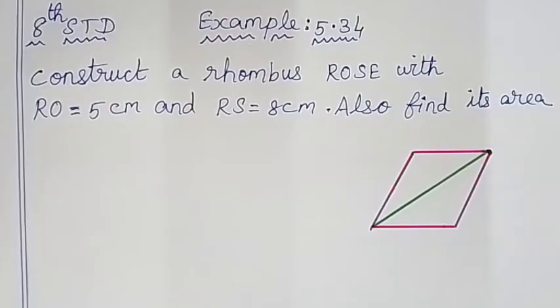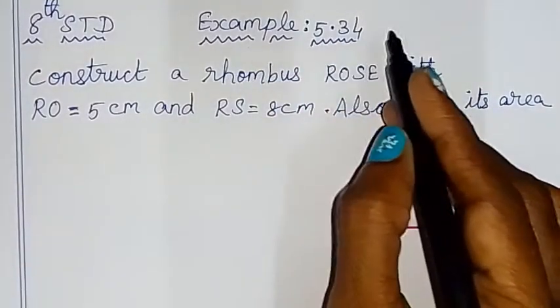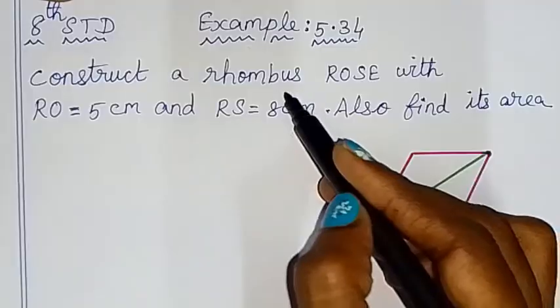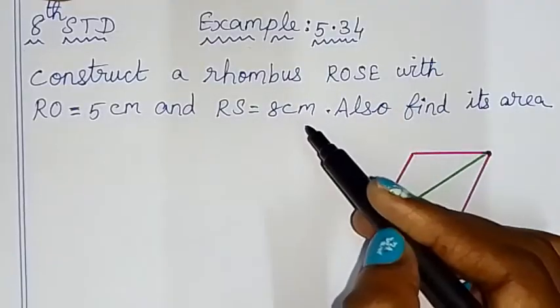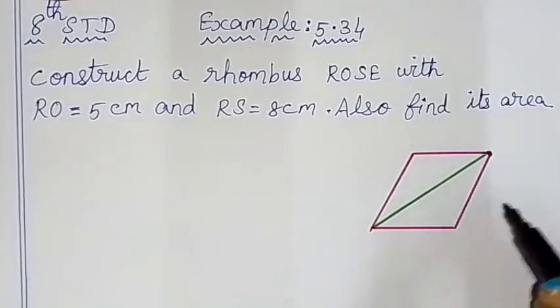Hello children! Example 5.34: Construct a rhombus with given measurements. Also find the area.